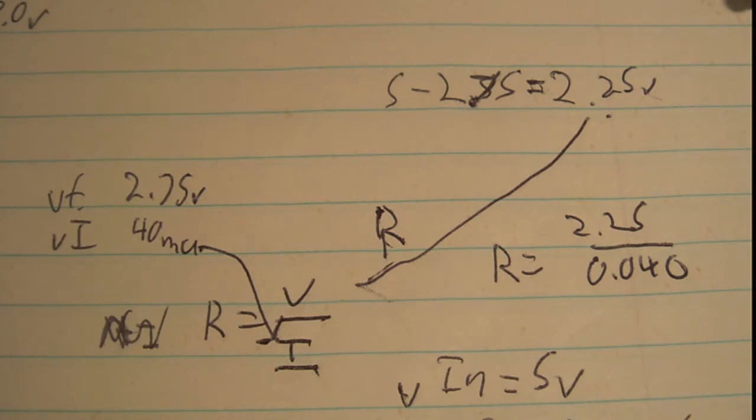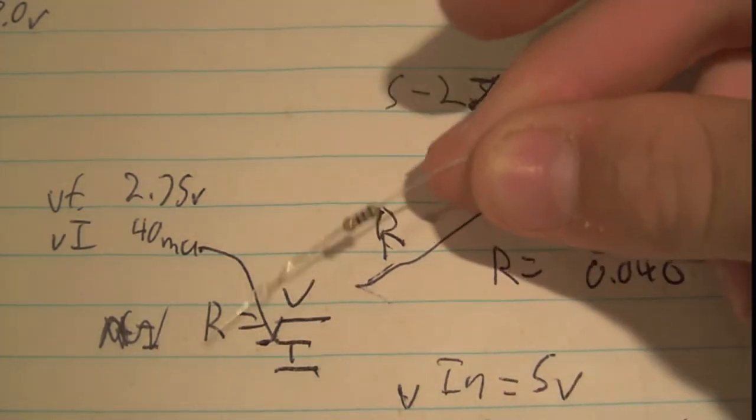So 56 ohms is going to be green, blue, black, because black is times one, and green, blue is 5.6.